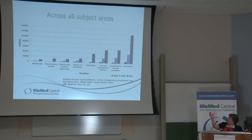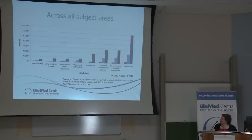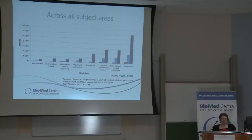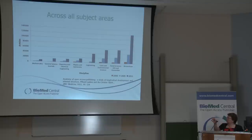And it's across all subject areas as well. This is from an article published in one of our journals, BMC Medicine — called 'The Anatomy of Open Access Publishing: A Study of Longitudinal Development and Internal Structure.' It shows the growth of open access in different fields. Although biomedicine is leading the way significantly, because it's really where it started, you can see that in all areas it is growing pretty fast.